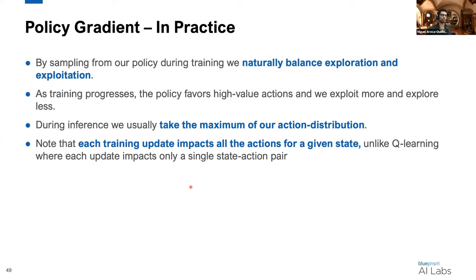We're more certain about which actions we need to be taking and we start taking those actions more frequently. There's this implicit balance and the exploration naturally balances itself during training, which is quite nice. During inference, we can simply take the maximum of our action distribution.